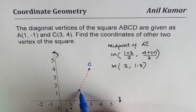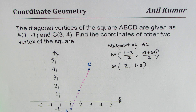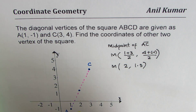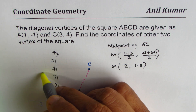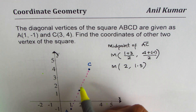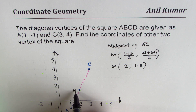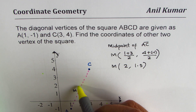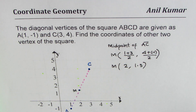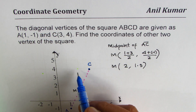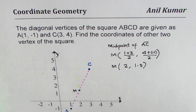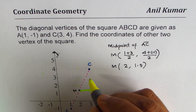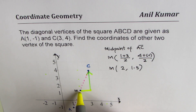So the midpoint M is (2, 1.5), which is the center of this diagonal and will be the center of our square. Now we need to find where the other two vertices are. The other two should be placed diagonally. To go from midpoint M to C, we have to go 1 unit to the right and 2.5 units up — that is the change in x is 1 and the change in y is 2.5.